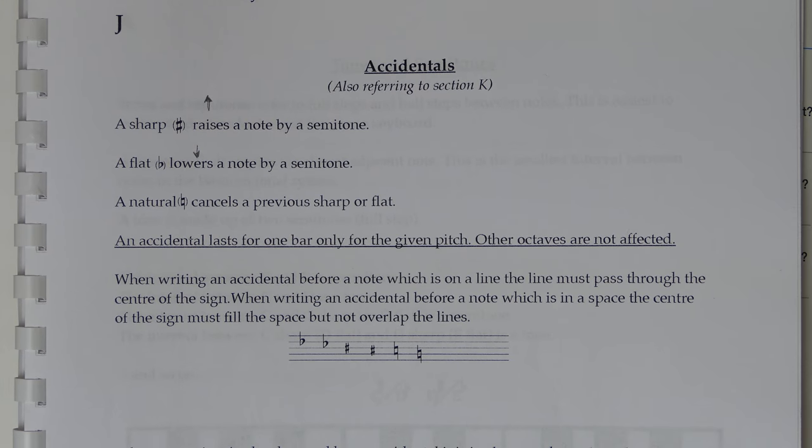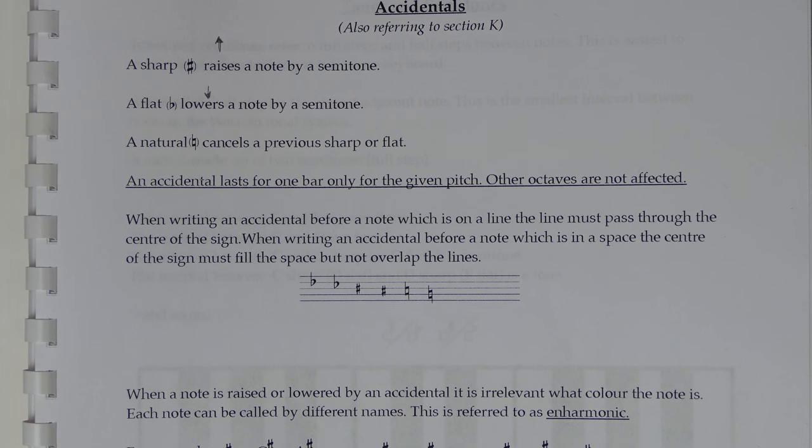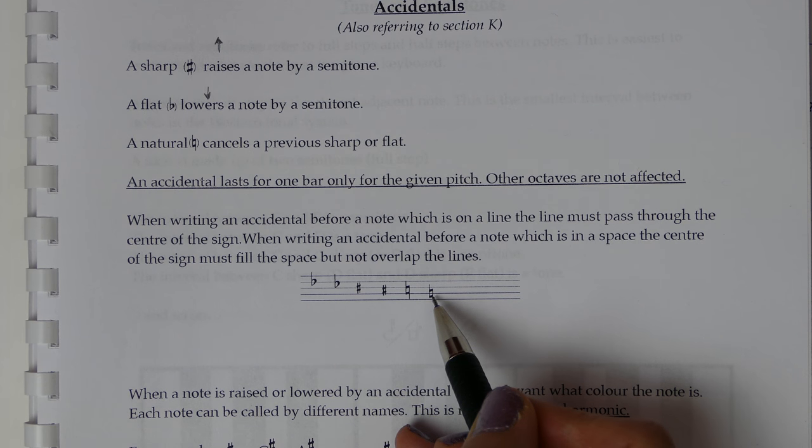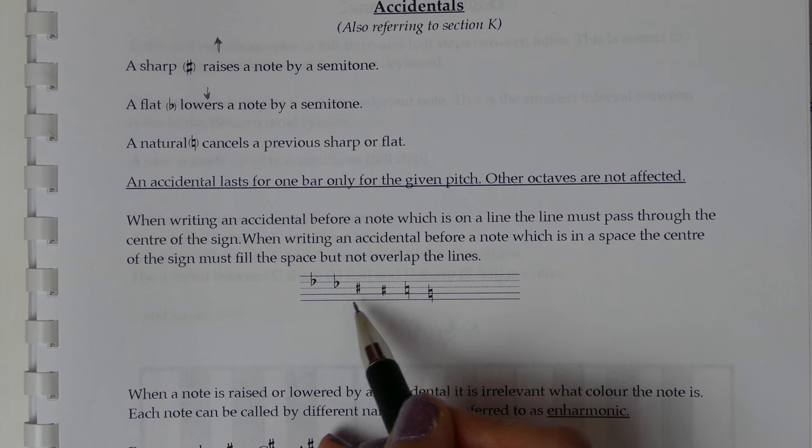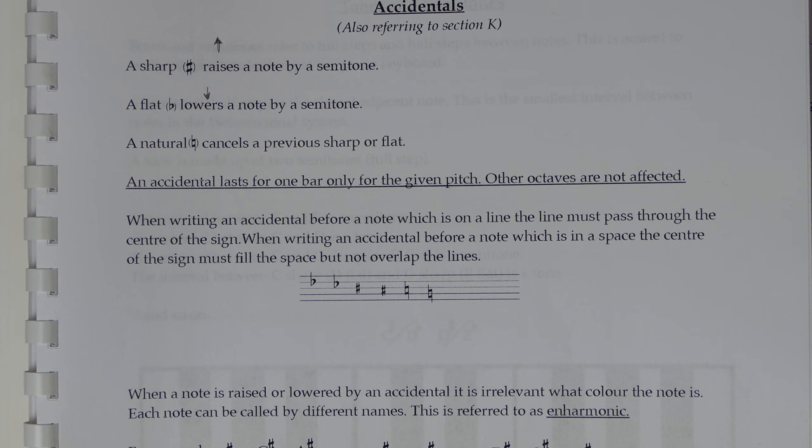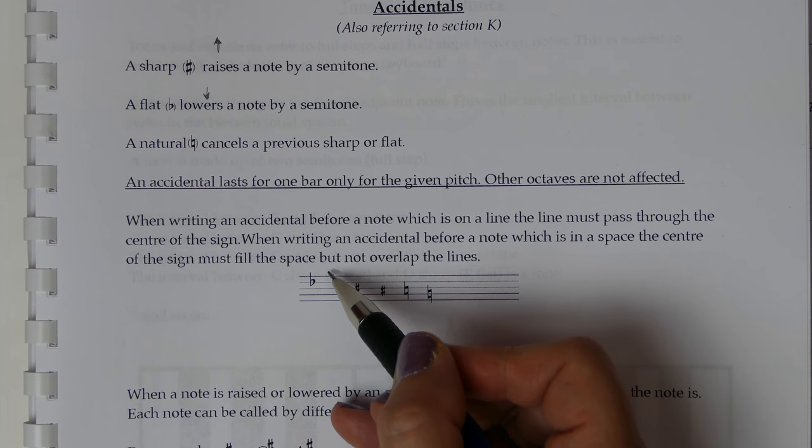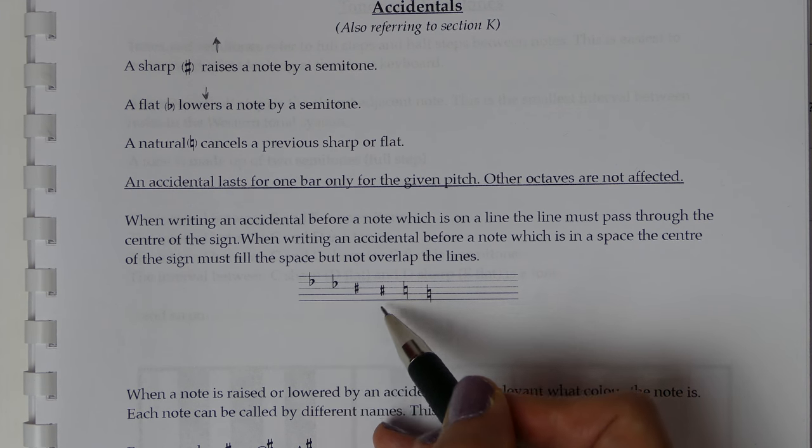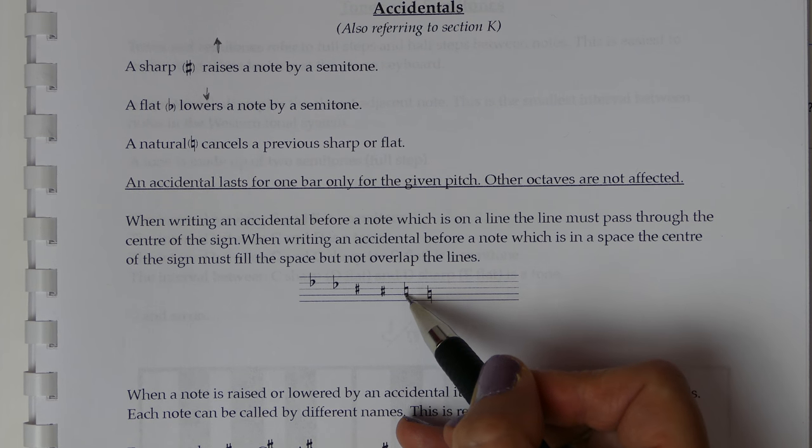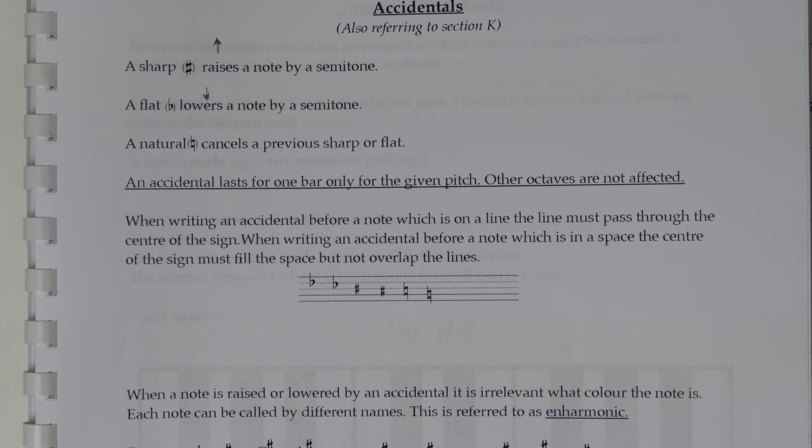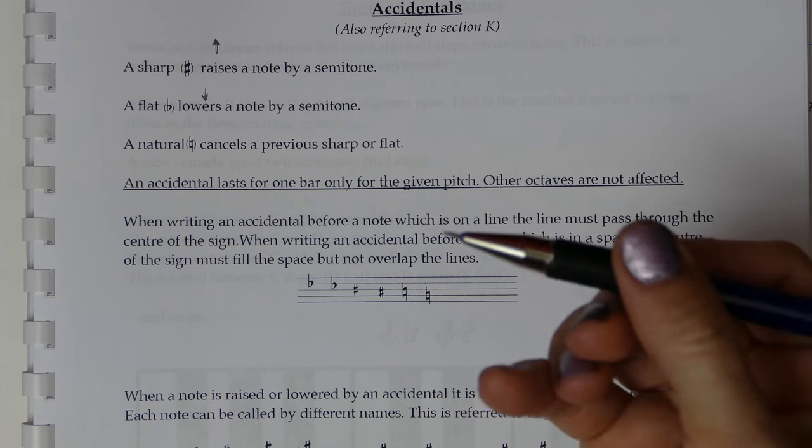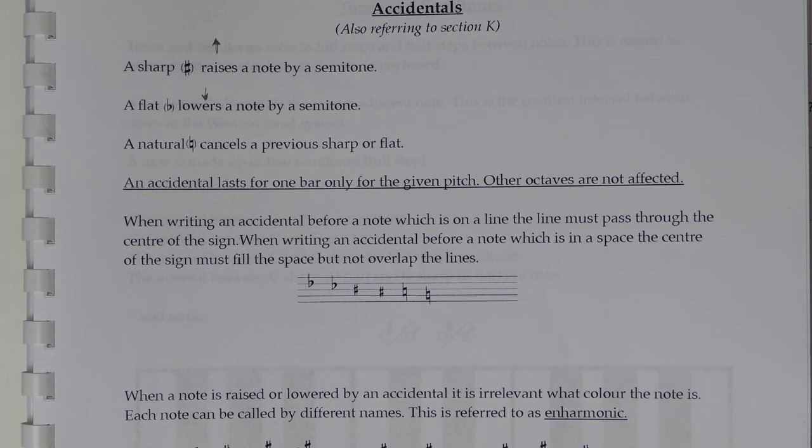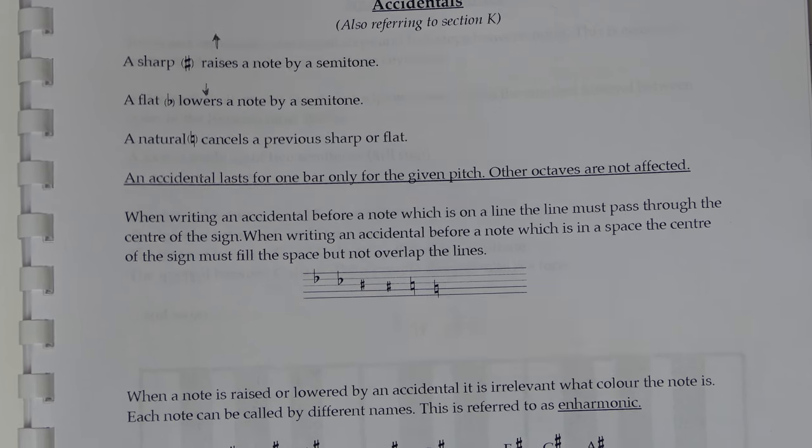When you're writing these symbols you've got to think they're written just as precisely as if it was a note so if the flat sign or the sharp sign or the natural sign is on a line you can see that the line must go through the center of the symbol. If it's written on a space you'll notice that it doesn't overlap but the kind of the box of the symbol is literally within that space and doesn't overlap. You can see it's enclosed in the center of the symbol so just be careful when you're placing those that's why you need a really really sharp pencil so either make sure your pencil is super sharp or use a mechanical pencil to make sure it's always going to be sharp.